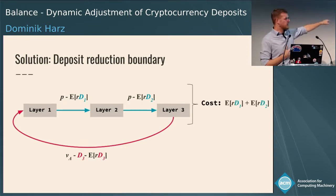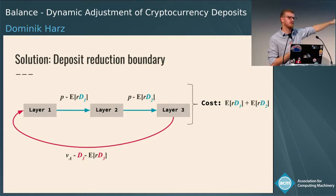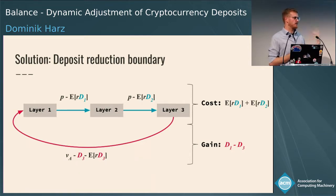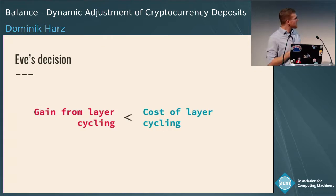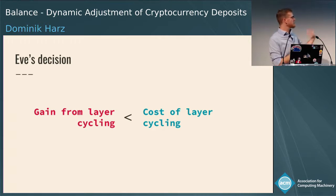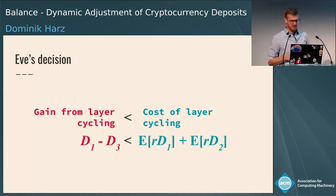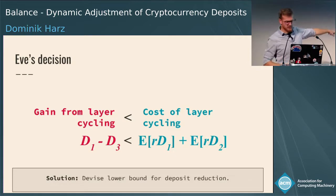By participating in the two-step cycling strategy, Eve incurs a cost: she had to lock up her collateral for those periods, expressed as the expected lock-up cost. But she gains something by losing less collateral when misbehaving — a gain from paying less penalty. The condition we need is that the gain from the layer-cycling strategy must be less than the cost of that strategy. From this condition — with a few more parameters — we can derive the lower bound on collateral reduction.